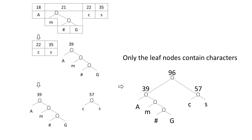C and S become the left and right children of a binary tree node. The occurrence of the parent is 22 plus 35, equal to 57. Since 57 is greater than 39, the newly created binary tree is inserted to the end. Finally, only one node is left. The total occurrence is 96. The left subtree includes A, M, pound sign, and G. The right subtree includes C and S. From this code tree, we know that only the leaf nodes contain characters. This is how the tree is constructed.